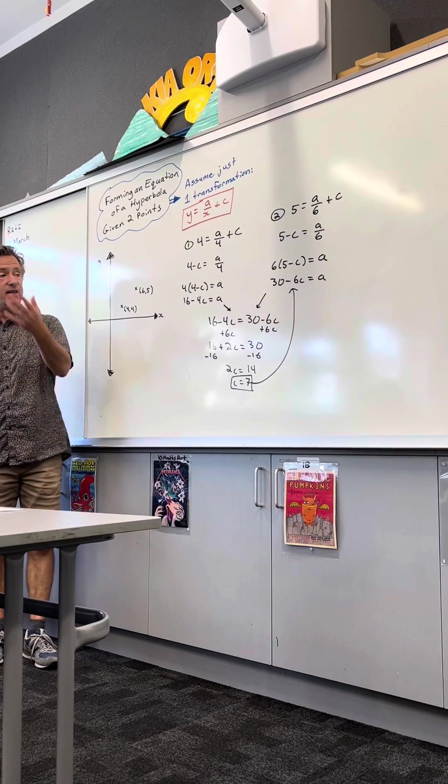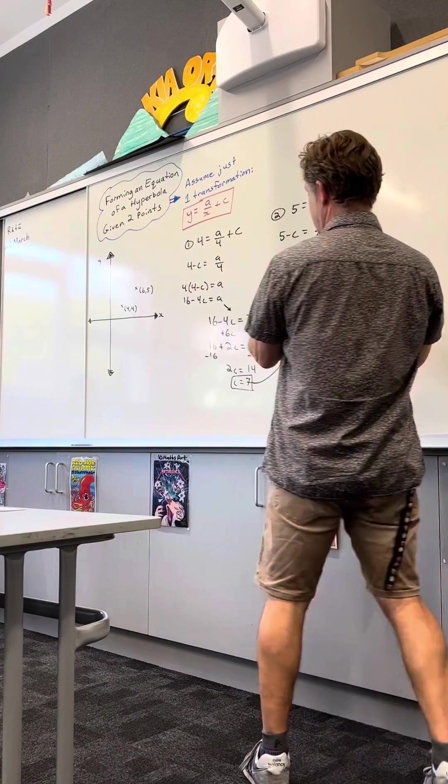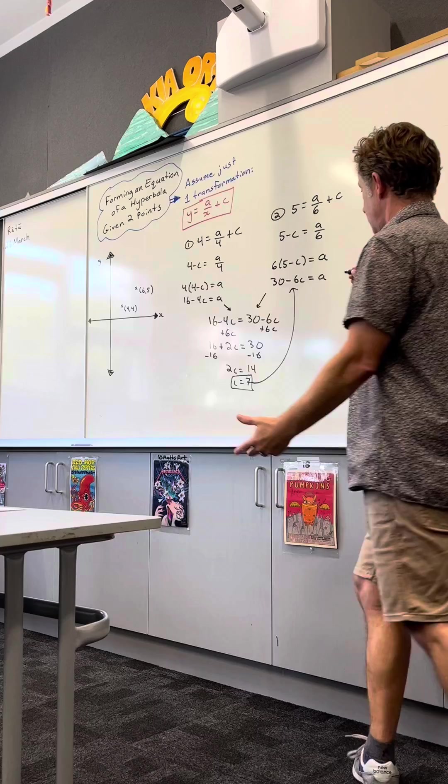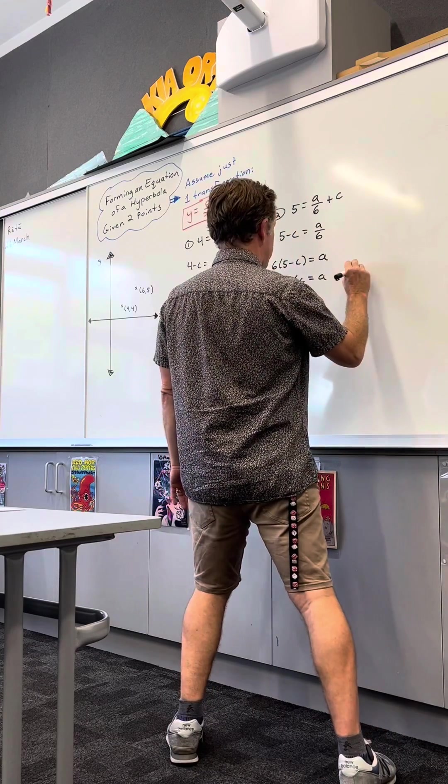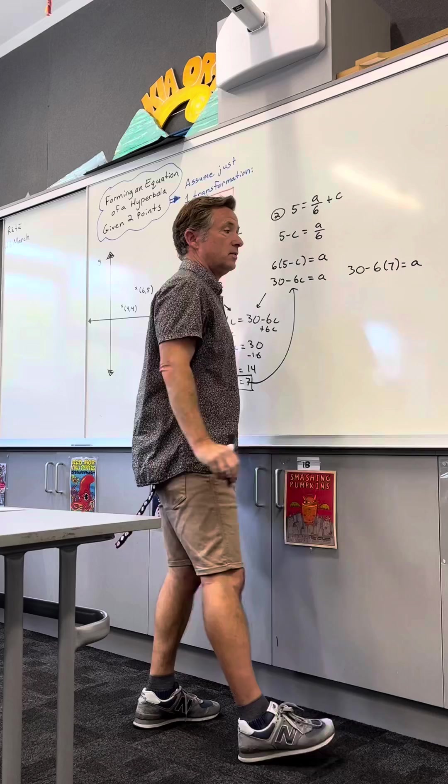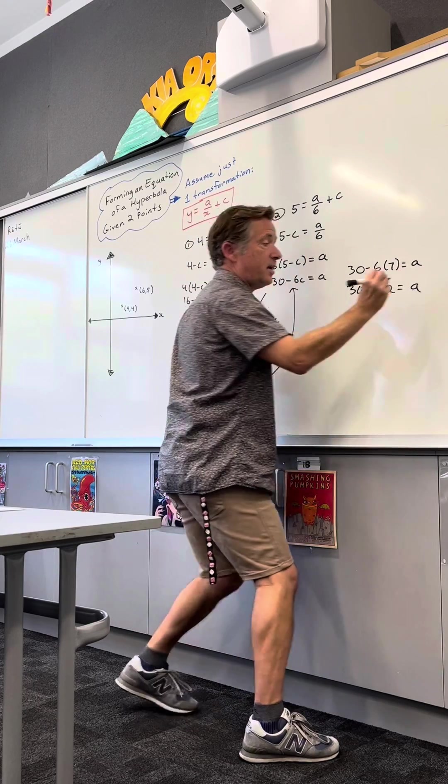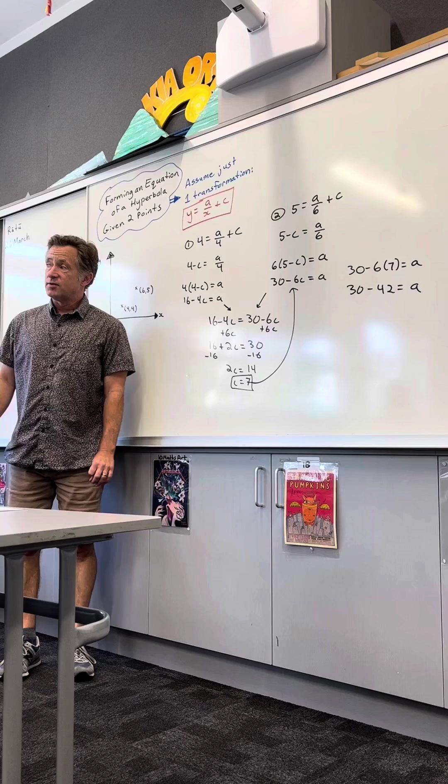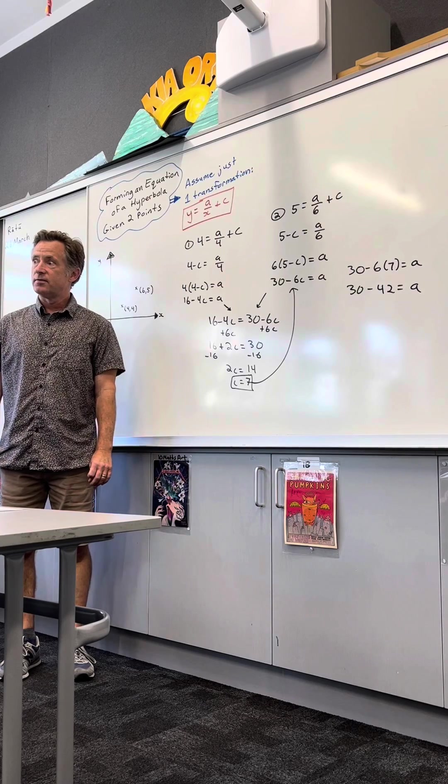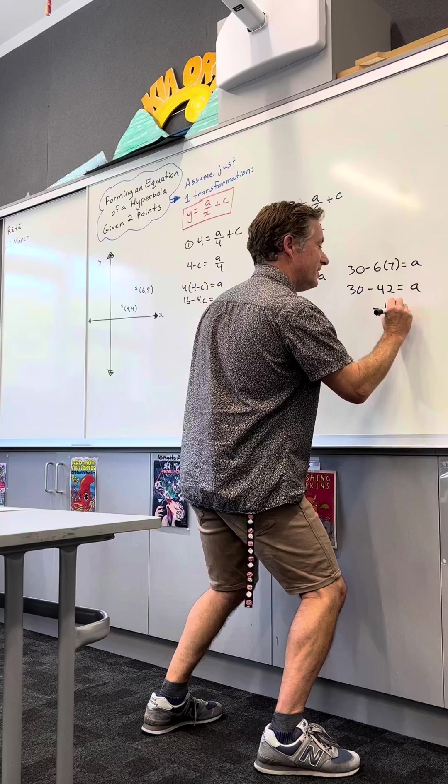That's quite an easy step to solve for a because I already have an equation set to a by itself. All right, so I go, 30 minus 6 times 7 is going to equal a. So 30 minus 42 equals a. I think a gives me negative 12. It gives me negative 12.